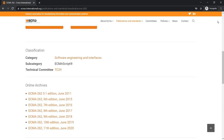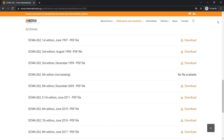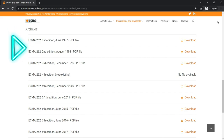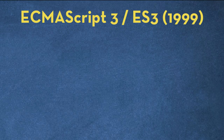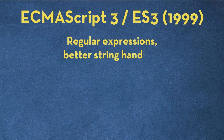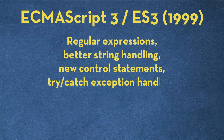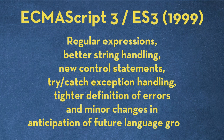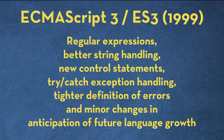ECMAScript has come up with many versions, each better than the previous one. From ECMAScript 1 to ECMAScript 5, we saw small updates and minor feature additions — except for ECMAScript 3. ES3, released in 1999, introduced regular expressions, better string handling, new control statements, try-catch exception handling, tighter definition of errors, and minor changes in anticipation of future language growth.